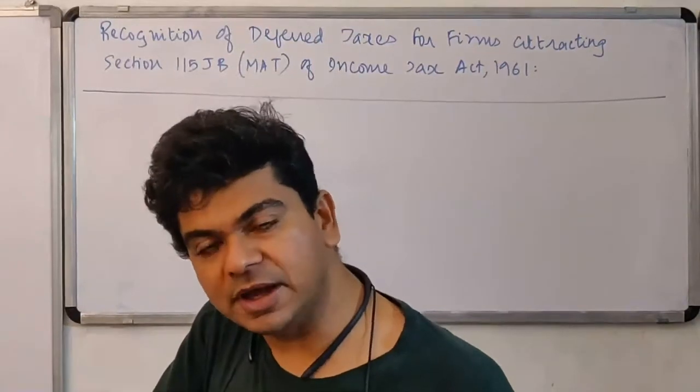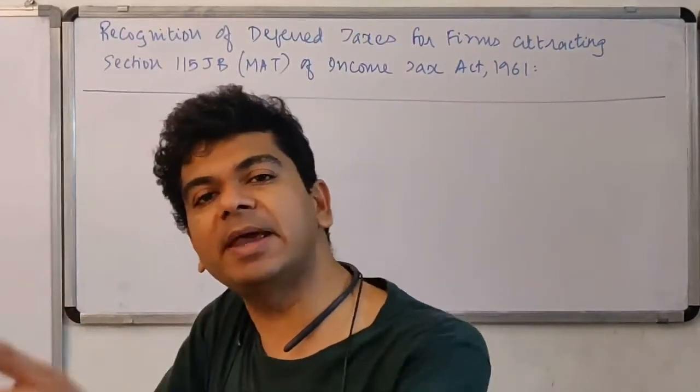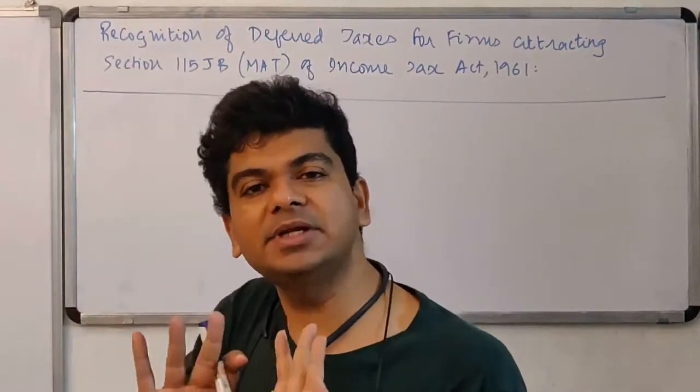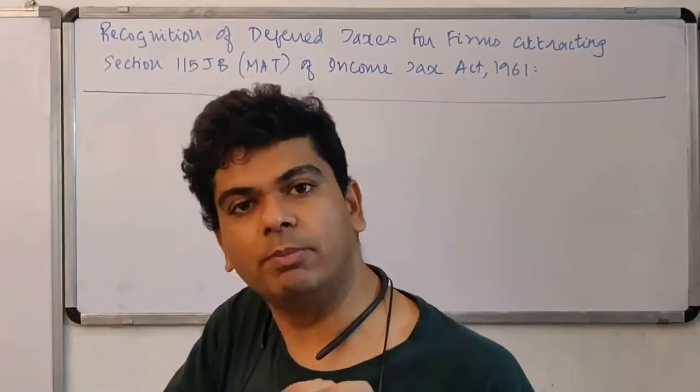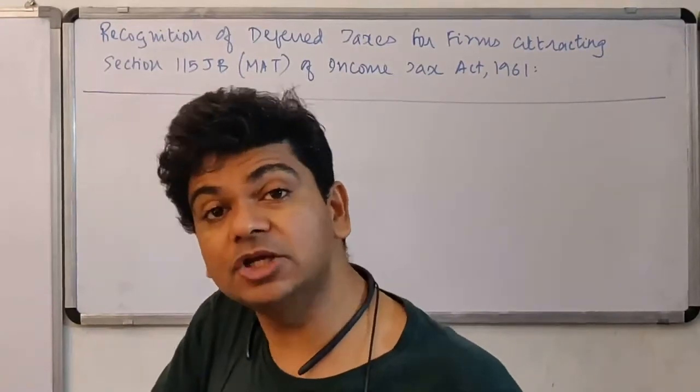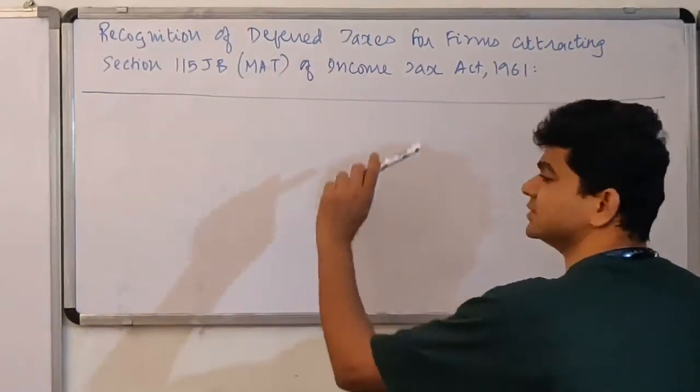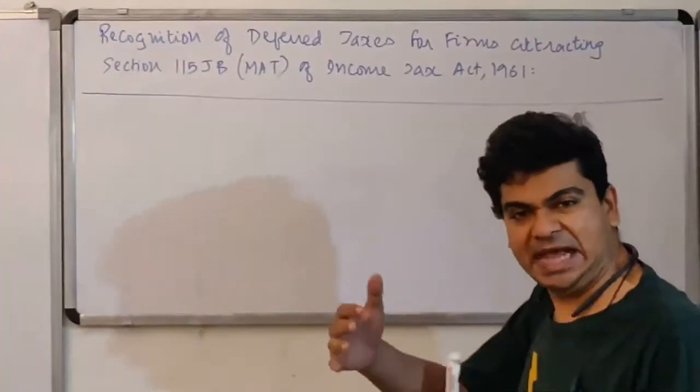So if the amount is turning out to be higher for the book profit, then I will pay the tax on the book profit. Whatever tax that you are paying, consider that as current tax in your books. But an issue now arises. How should I measure deferred taxes? Question is what exactly is the issue?